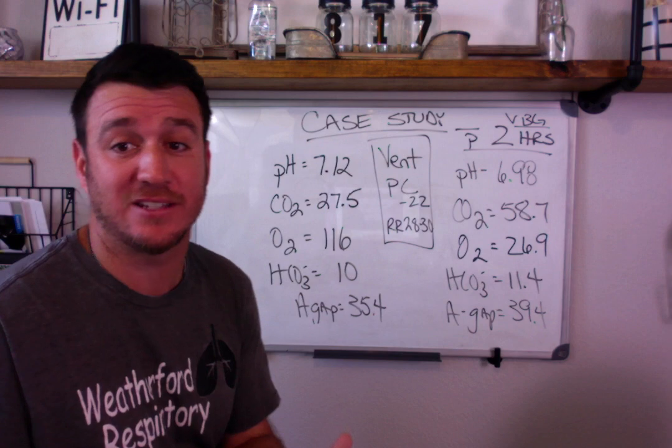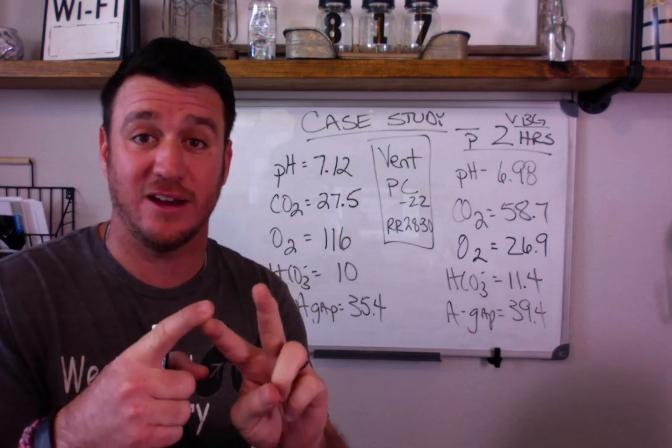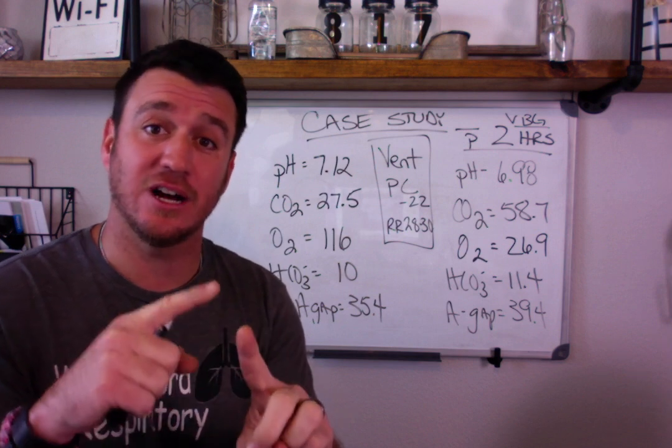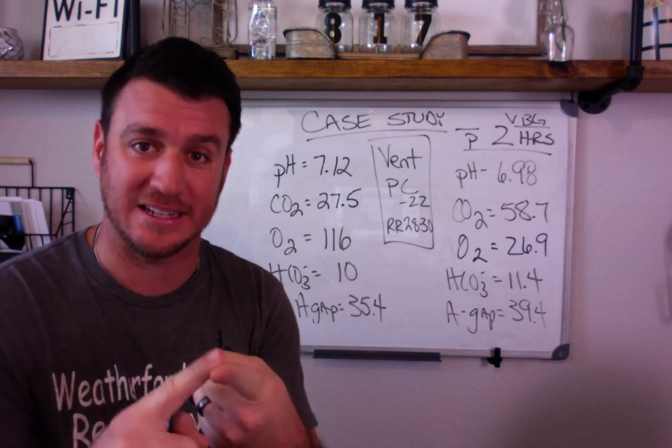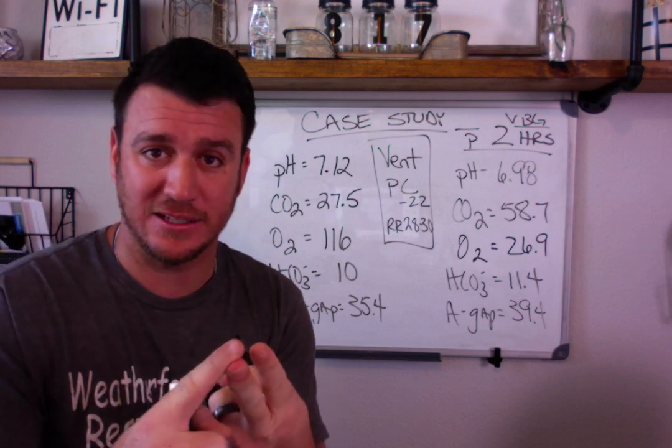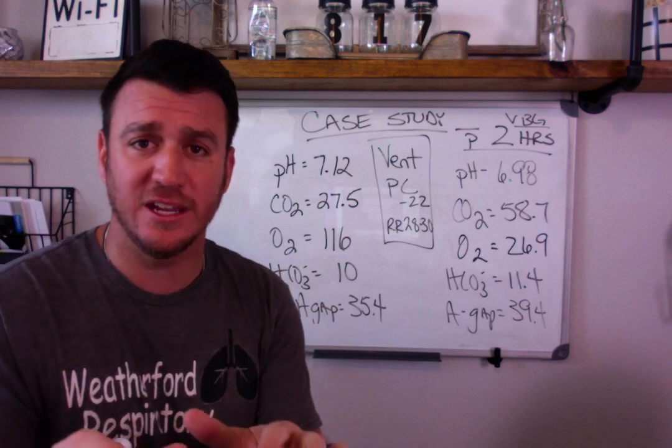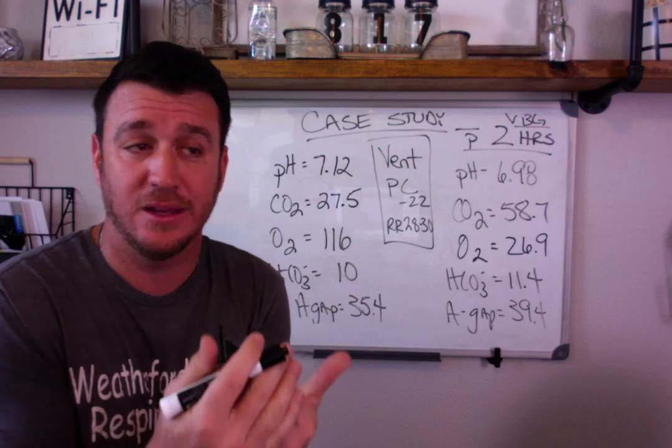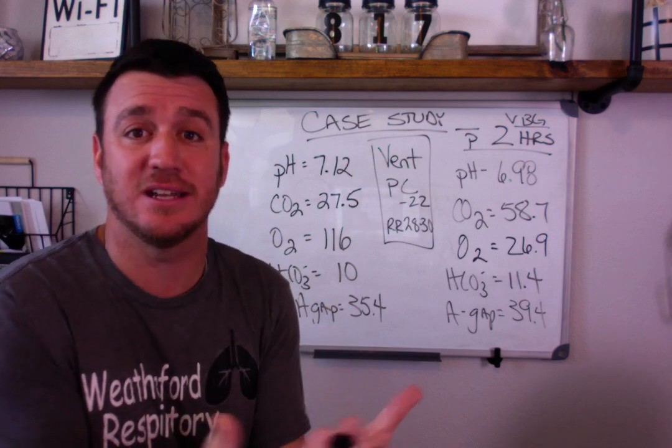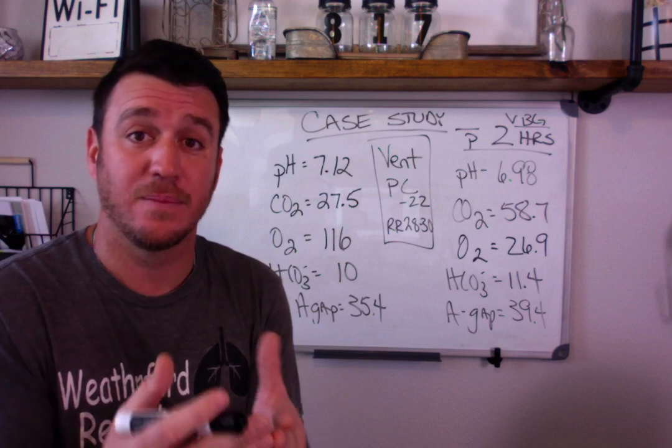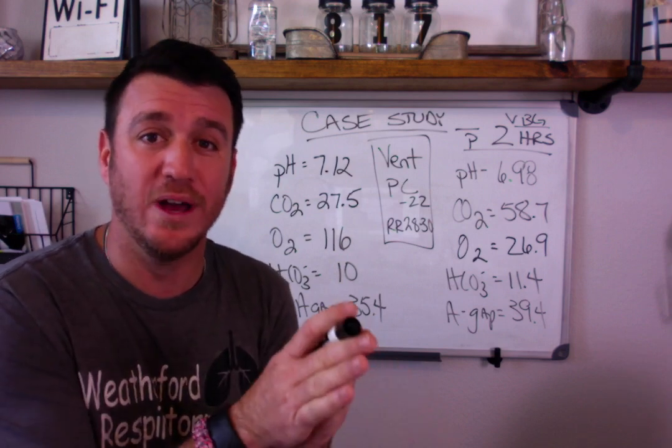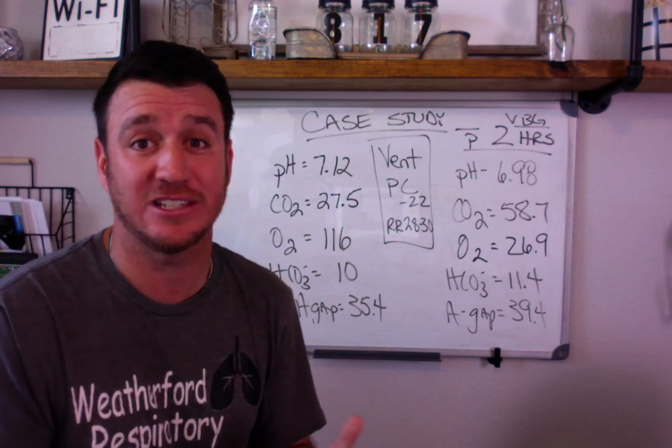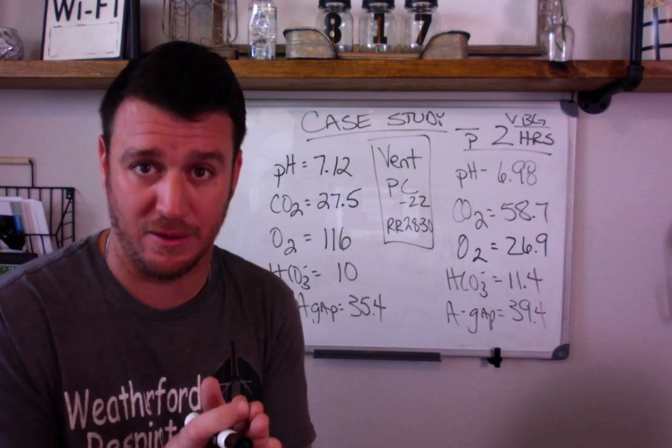Now what causes the metabolic acidosis? Two things: either a gain in non-volatile acids or a loss in bicarb. Things that will cause an increase in your non-volatile acids are things like lactic acidosis, diabetic ketoacidosis, to name two of the big ones. Those are big, common increases in non-volatile acids. Now, giving bicarb to those patients will not help. It will not fix the metabolic disturbance. It may make your blood gas look a little better, but it's not going to fix the problem.